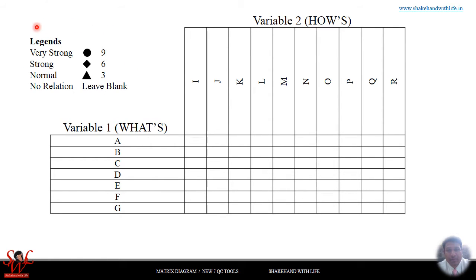Here are the legends used for showing relationships. If there is a very strong relationship, we use a dark circle symbol or the numeral 9. For a strong relationship, it is a diamond or numeral 6. For a normal relationship, it is a triangle or the numeral 3. If there is no relation, we leave the cell blank. This is a matrix diagram where we analyze two types of variables by putting symbols or numerals in the intersecting cells.